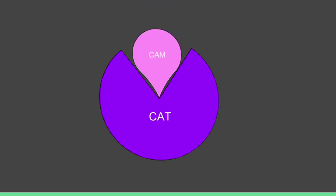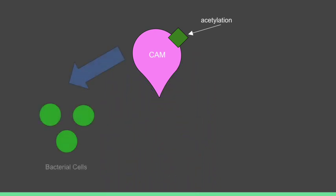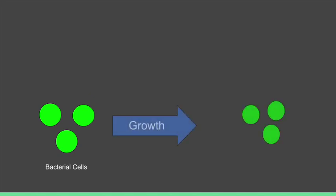In response to the effects of the CAM antibiotic, bacteria have developed a defense mechanism utilizing the previously mentioned CAT enzyme. This enzyme functions by acetylating the CAM antibiotic. This acetylation inhibits CAM's activity and prevents the antibiotic from acting on bacteria cells effectively. Now, bacteria cells can grow at normal rates.